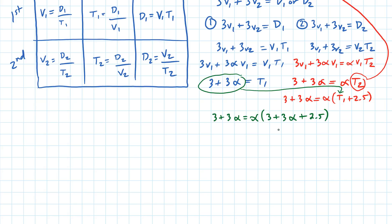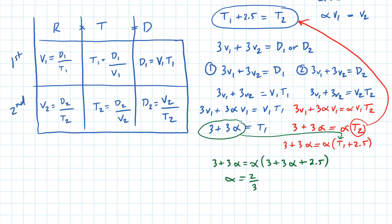Then you can use the quadratic formula and eventually you're going to get alpha equals two thirds.